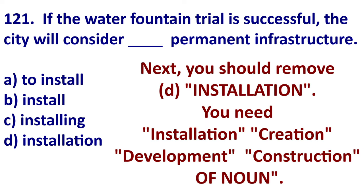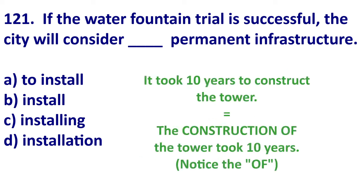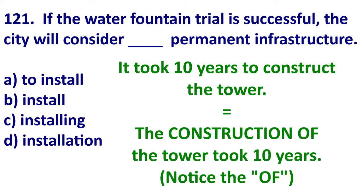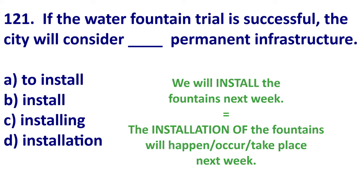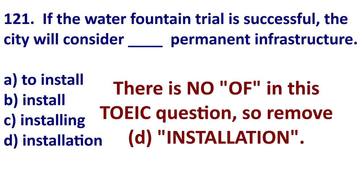Next, we can remove D. If you use development, installation, creation, construction, or formation, we will use 'of' when we are talking about what we create. An example: it took 10 years to construct the tower — the construction of the tower took 10 years. Notice: construction of. Or: we will install the fountains next week — so the installation of the fountains will happen next week. There's no 'of' in option D, so remove it.